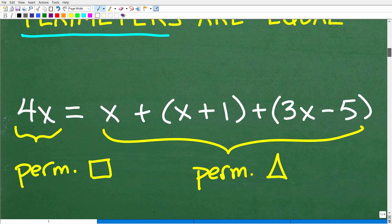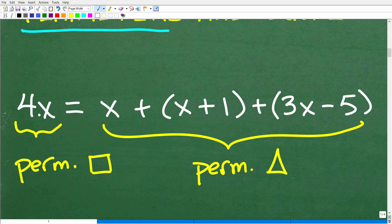So here is our perimeter of our square. It's 4x. Remember, it's x plus x plus x plus x. 1, 2, 3, 4. You get the idea. So the perimeter of the square is 4 times x.